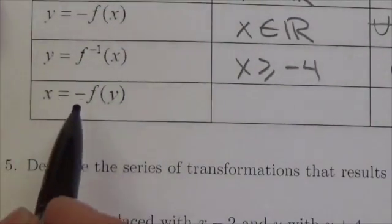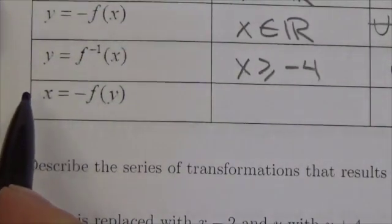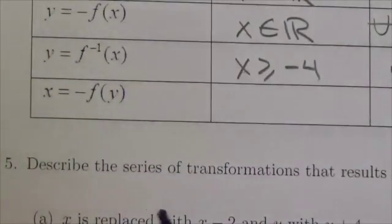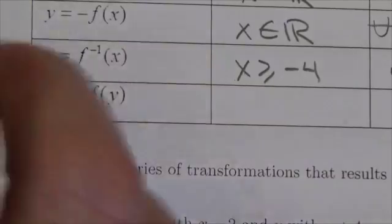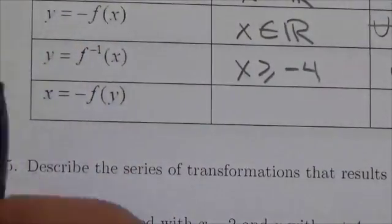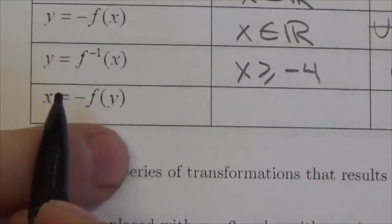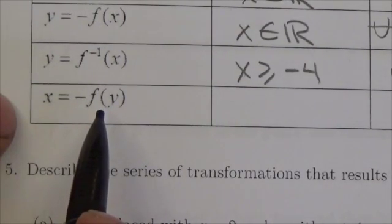Now bear in mind that negative can be over here on the x, and when it's on the x that's a horizontal reflection over the vertical axis, so it's a reflection over the y-axis. And the fact that we've swapped the x and the y here refers to an inverse.